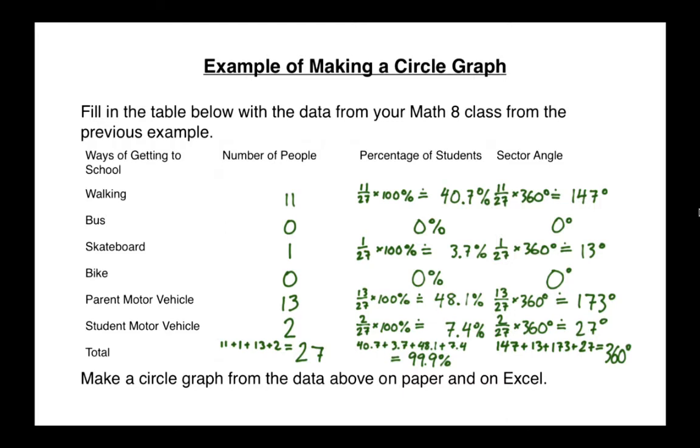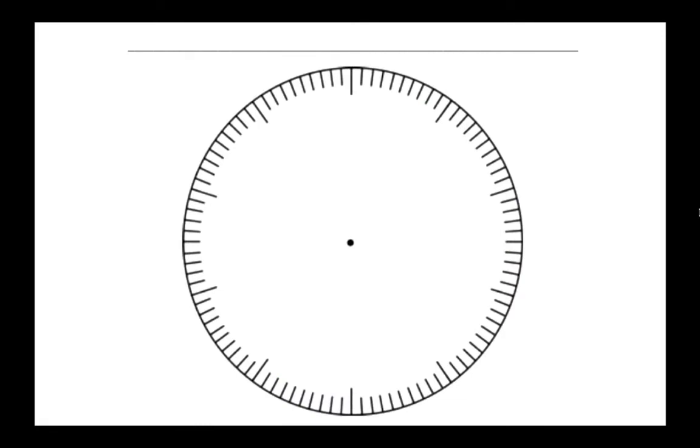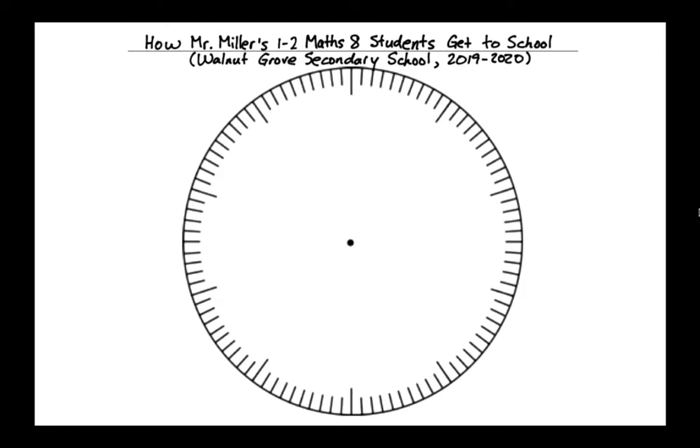Oh and by the way you may have noticed that there's no grid in here, it's not showing up. I'm not sure why, it's a bit of an issue with lower resolution on my screen for some reason, but don't worry about that, it should look just fine on your paper. In any case the instructions that follow are to make a circle graph from the data above on paper and on Excel. So first I'm going to show you how to make that graph on paper. So here is the circle that you're given and there's a line at the top, and at the line at the top you should be writing a title. I'm going to copy the same title that I had written for the bar graph, which is how Mr. Miller's 1-2 Maths 8 students get to school. This is at Walnut Grove Secondary School in the school year 2019-2020.